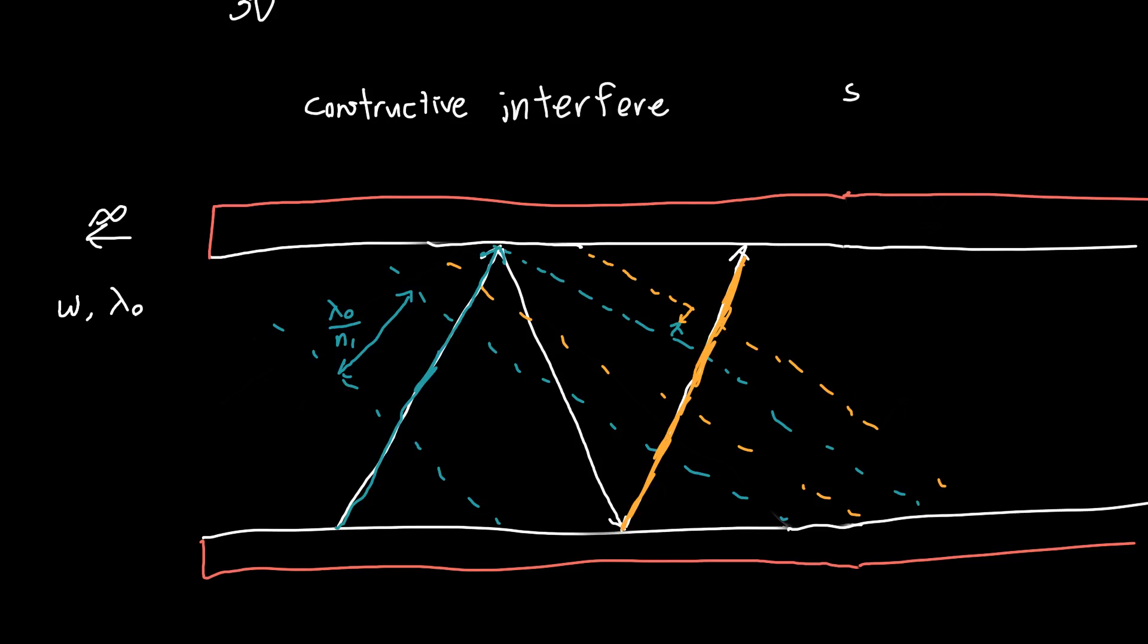You might imagine that if these phase fronts—if this yellow phase front and this blue one are right on top of each other—then we can get constructive interference. This is just adding a sine wave to a sine wave. Whereas if the phase fronts are half a wavelength apart, we're adding a sine wave and a negative sine wave and we cancel out the wave.